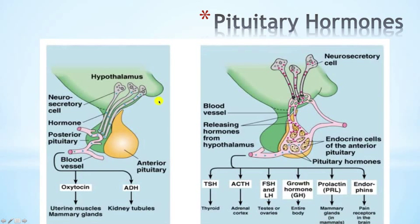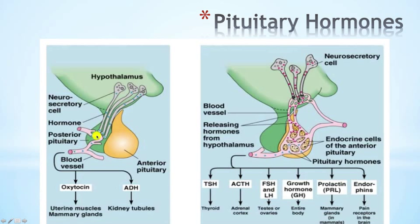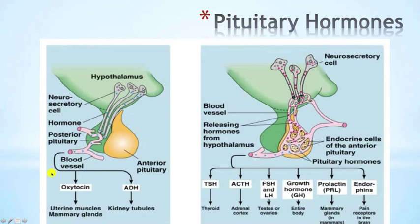Here we recap the two posterior pituitary hormones. This would be the hypothalamus and this would be the posterior pituitary. This vessel here would be the inferior hypophysial artery, which was a branch of the internal carotid artery — the cavernous portion. The two hormones being produced were oxytocin and ADH. ADH was important for water reabsorption in the collecting tubes of the kidney, and oxytocin was important for uterine muscle contractions to facilitate labor.